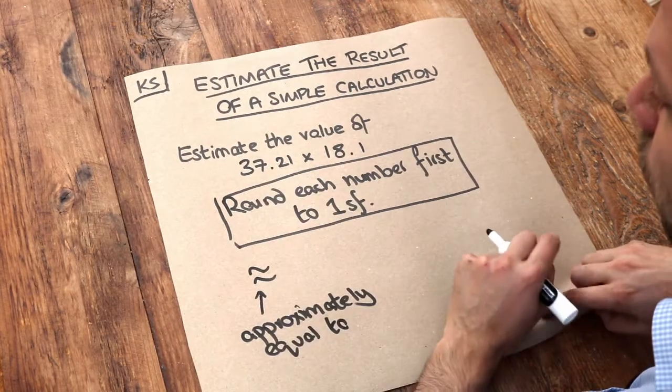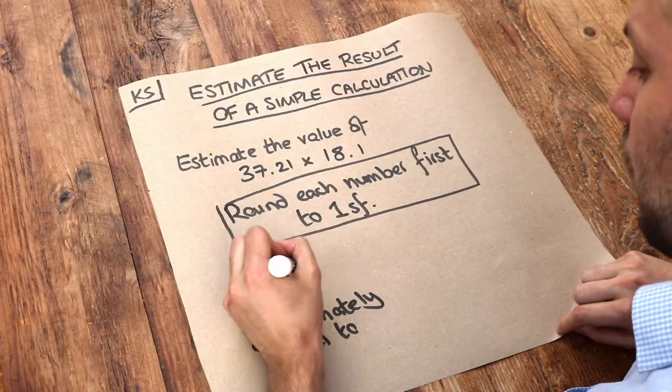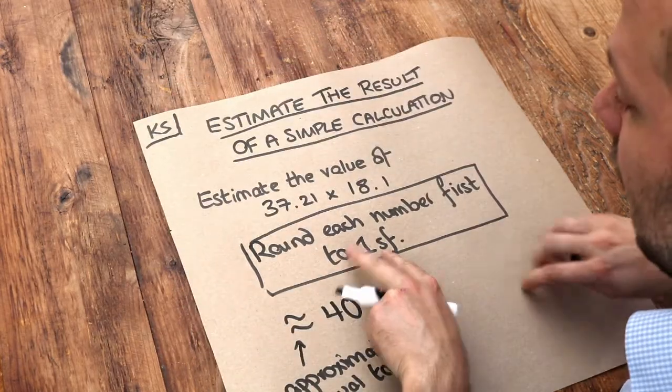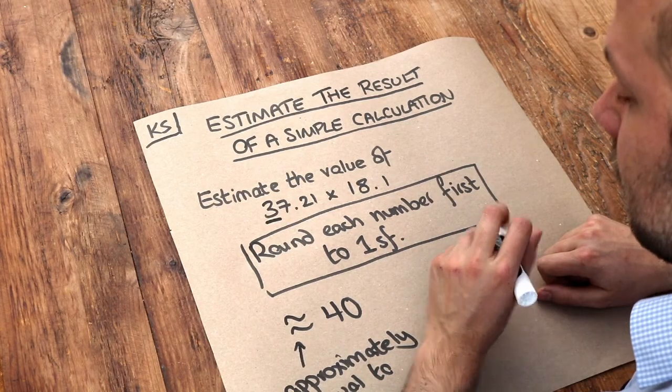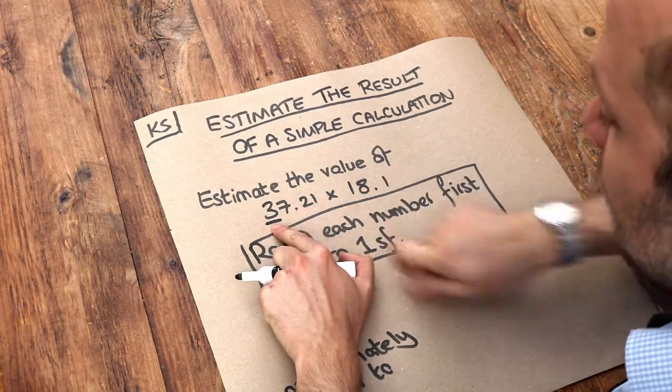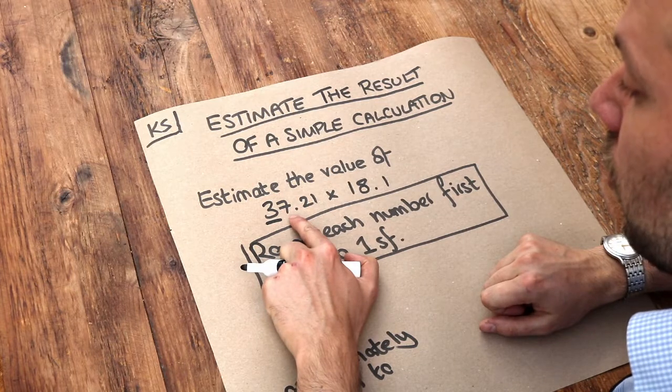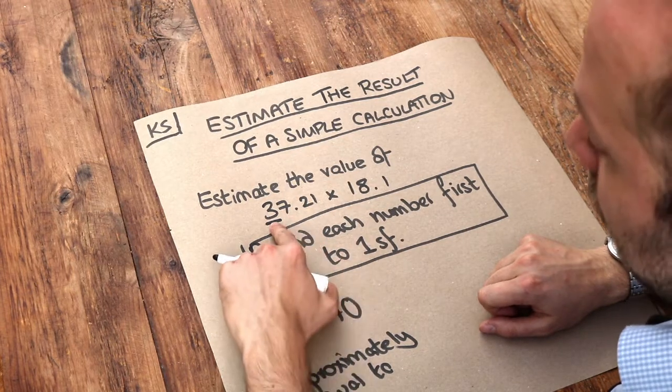And then this number to one significant figure is 40. And the way I got that is you just look at the first non-zero digit and then you look at the digit after. Is the digit after five or more? Yes it is, and so therefore that three goes up to four.